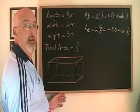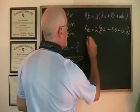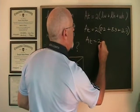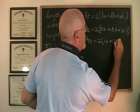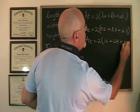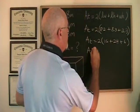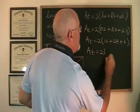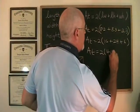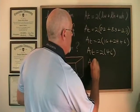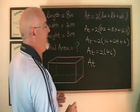Now let's simplify. 8 times 2 is 16, 8 times 3 is 24, 2 times 3 is 6. 16 plus 24 plus 6 is 46. And 2 times 46 is 92.